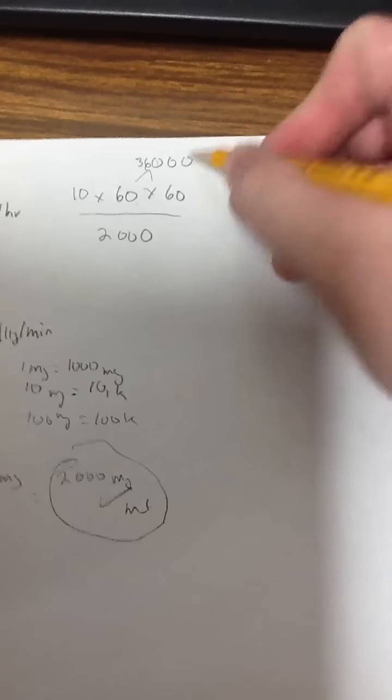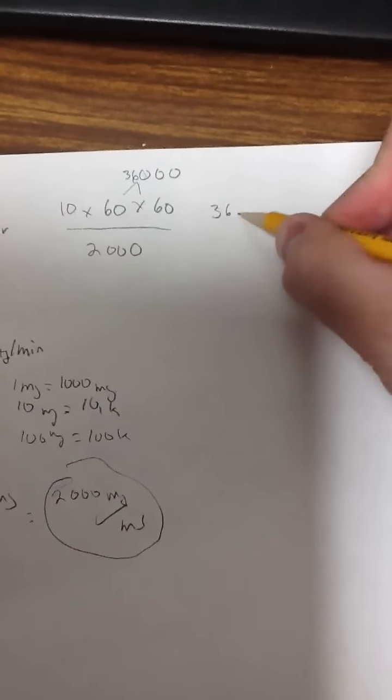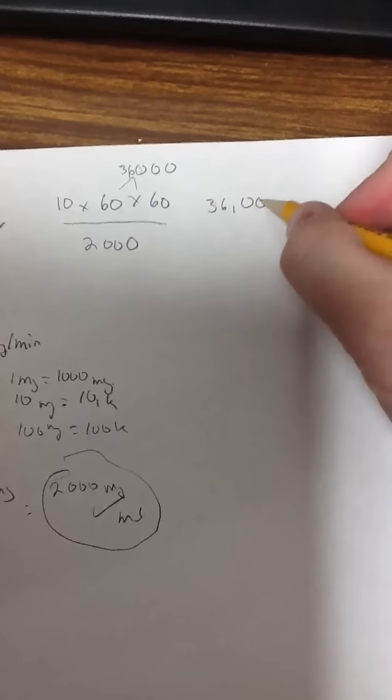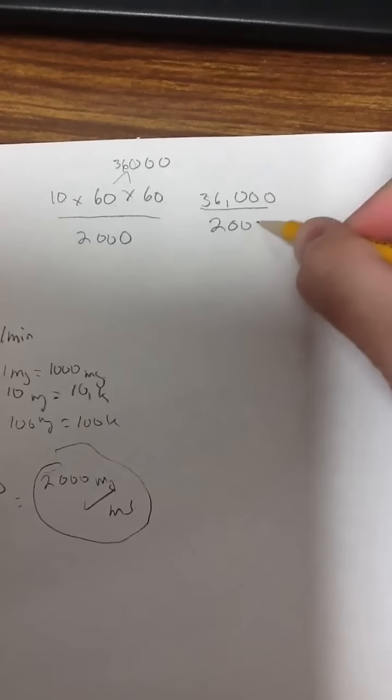36,000. I don't need a calculator for most of these calculations. 36,000, divided by 2,000. Let's go ahead and knock out some zeros here. That's what I have left over, 36 over 2.